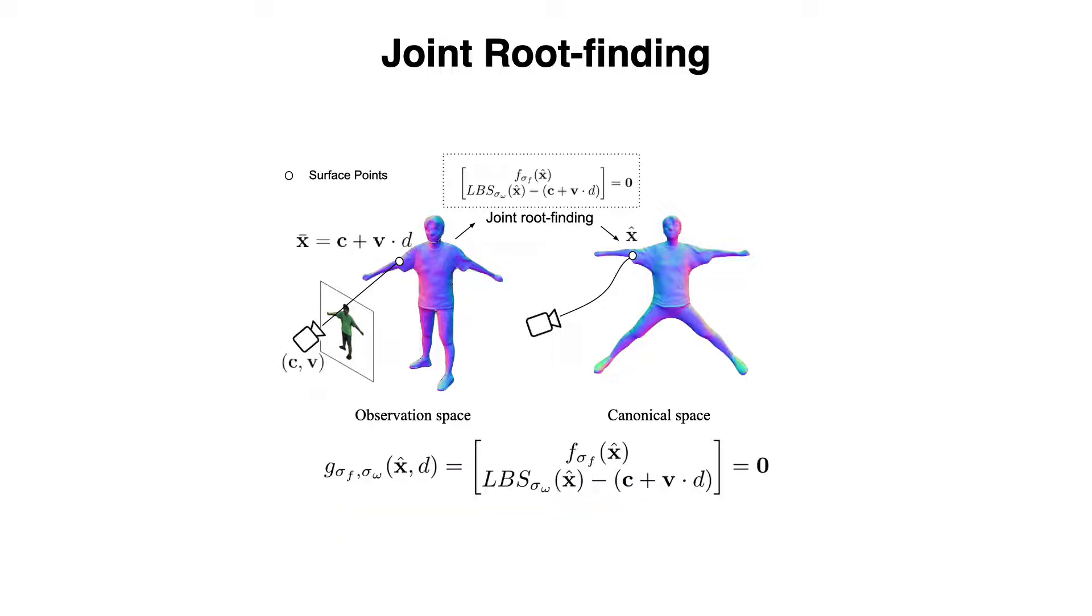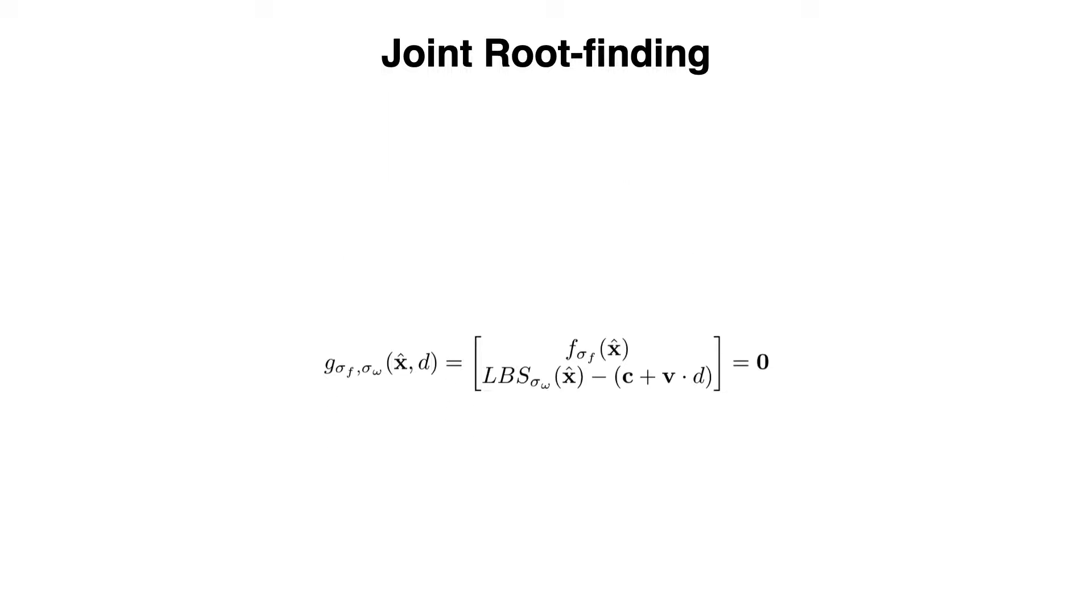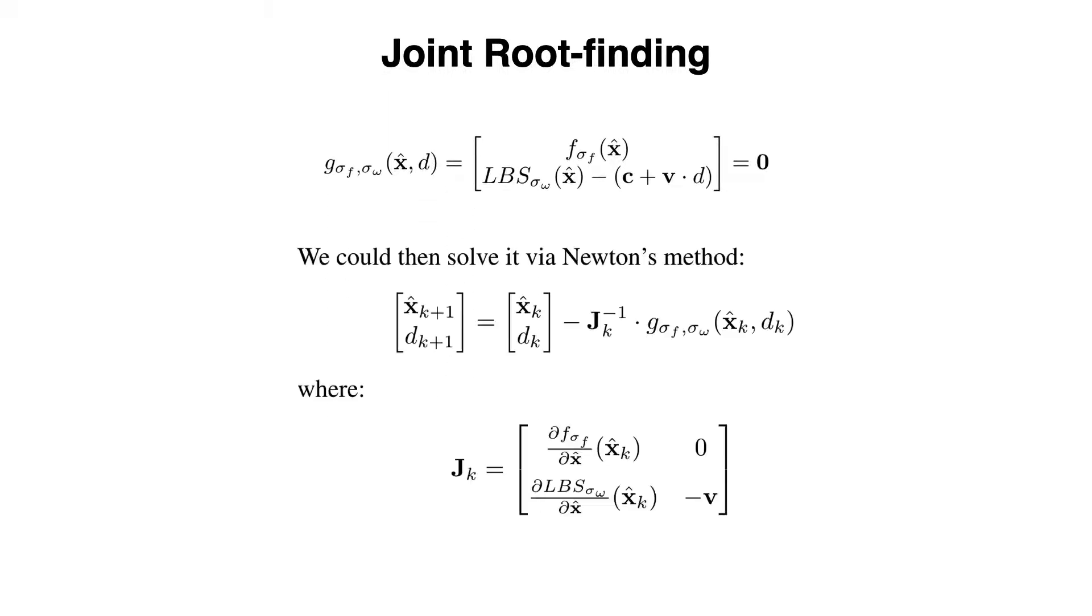We write the SDF function and LBS function as a joint vector-valued function. We can optimize the joint function G with Newton's method, with the Jacobian matrix defined as indicated.